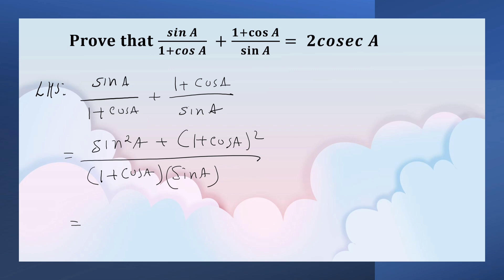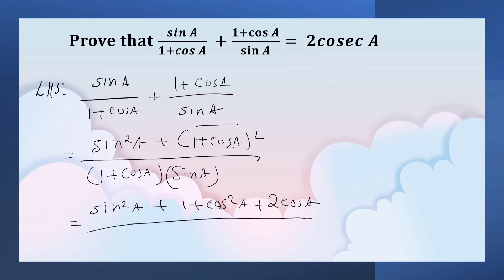Now, sin square A plus 1 — expand this by using the A plus B whole square formula — giving 1 plus cos square A plus 2 cos A, upon 1 plus cos A into sin A.